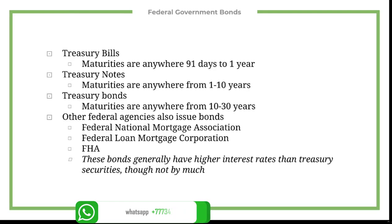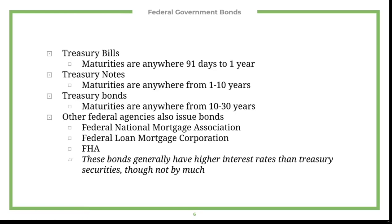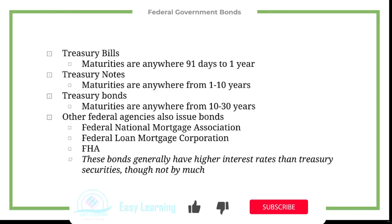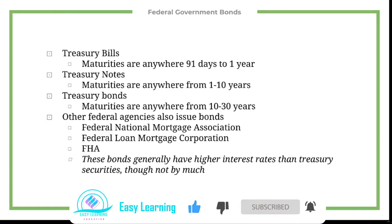Treasury notes have a maturity anywhere between one to ten years, and treasury bonds have a maturity anywhere from 10 to 30 years. Other federal agencies can also issue bonds.